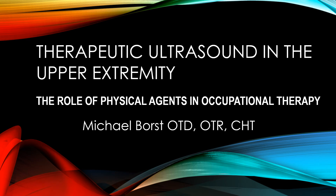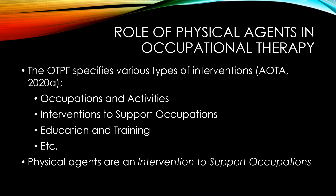In this video on therapeutic ultrasound, I want to talk about the role of physical agents in occupational therapy. The fourth edition of the Occupational Therapy Practice Framework describes various types of interventions. Some examples include occupations and activities, interventions to support occupations, education and training, and several others. Physical agents are an intervention to support occupations, so that's how they fit in occupational therapy.